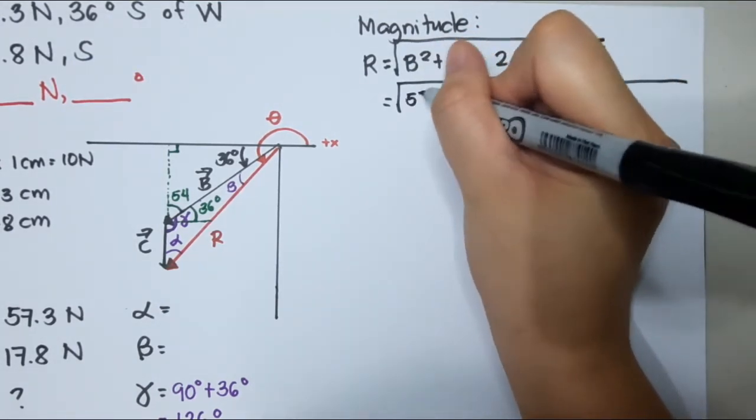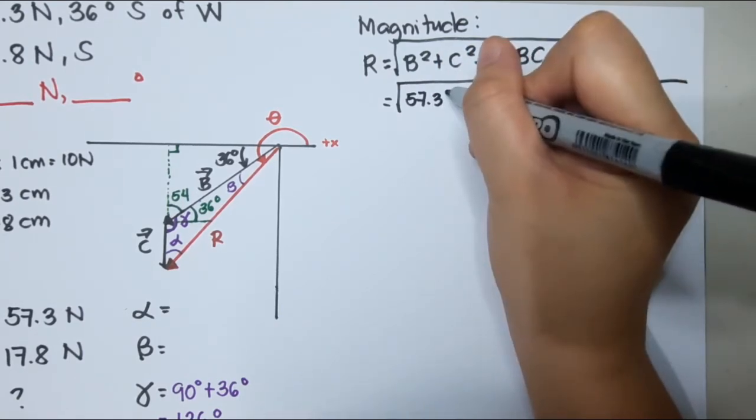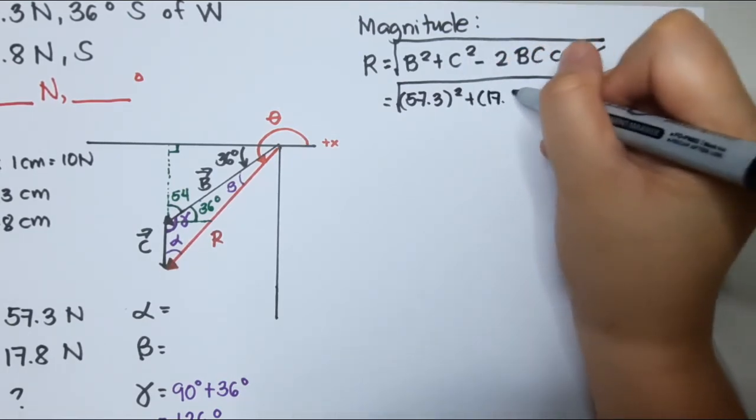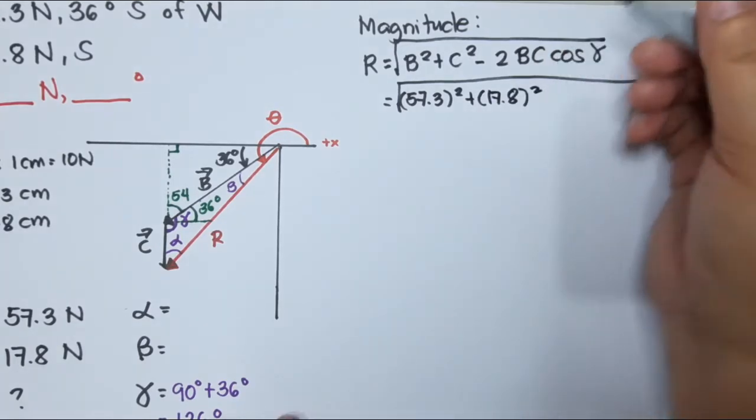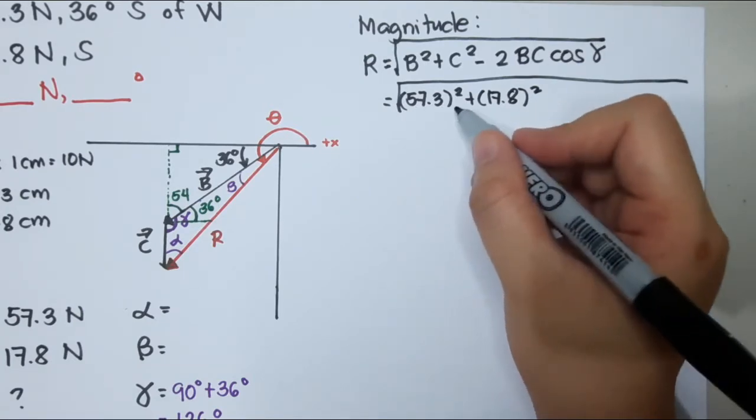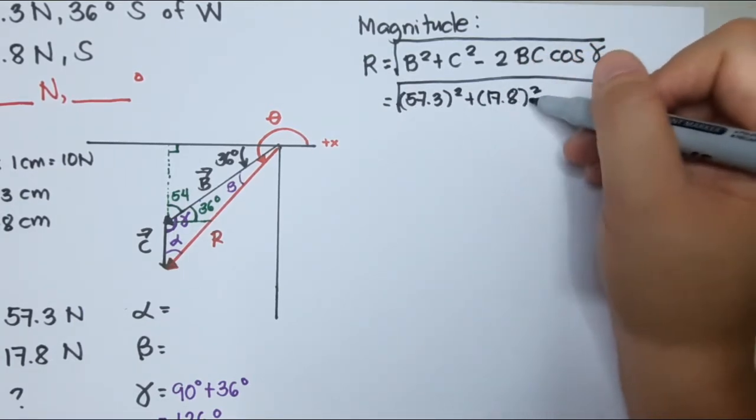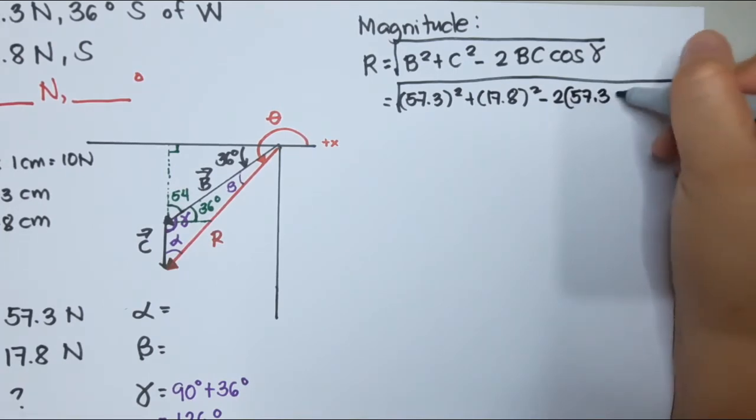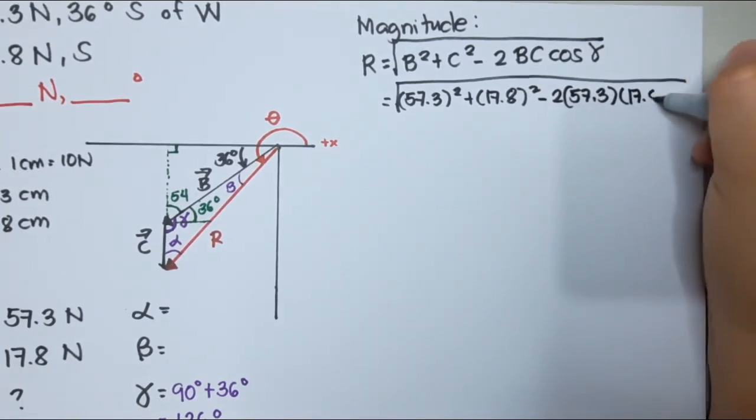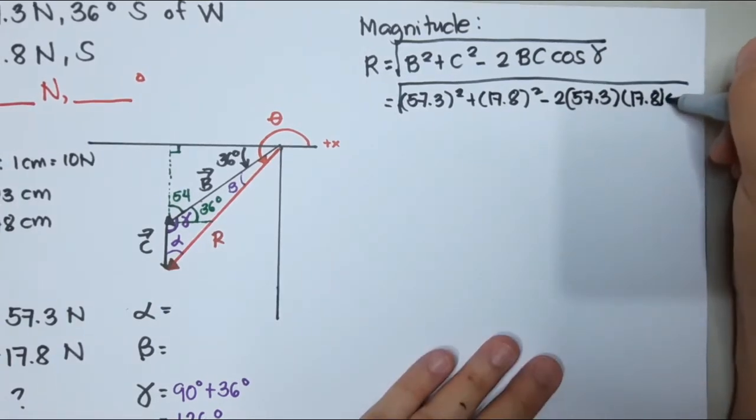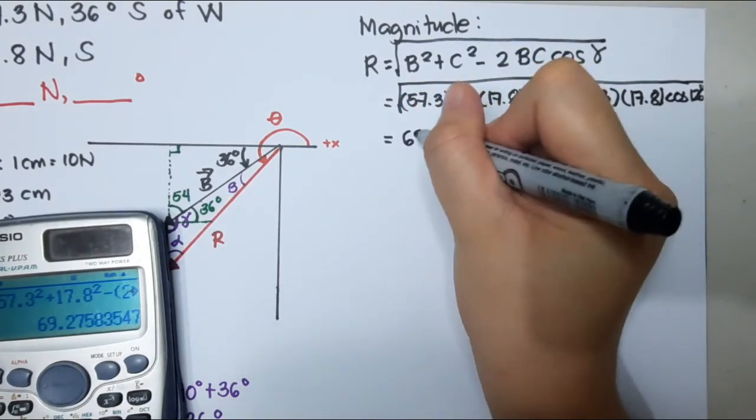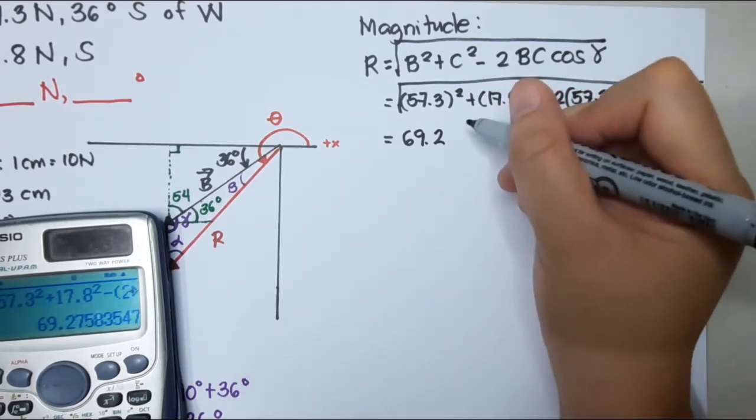That will be square root of vector B, 57.3 Newton squared, plus 17.8 squared. So for now I will not write the unit, but definitely you have to write your unit next time. So that is 57.3 squared Newton squared plus 17.8 Newton squared minus 2 times 57.3 Newton times 17.8 Newton cosine 126.